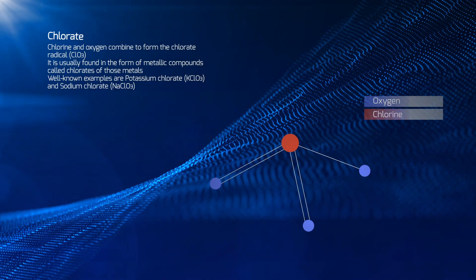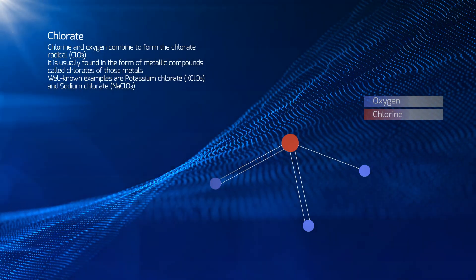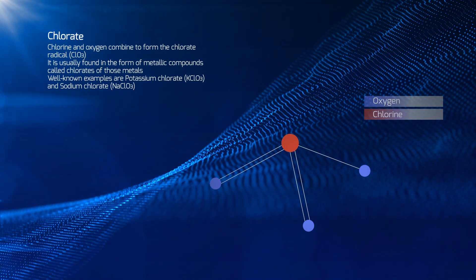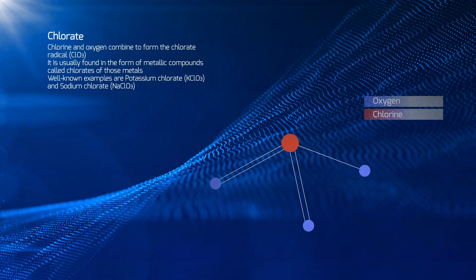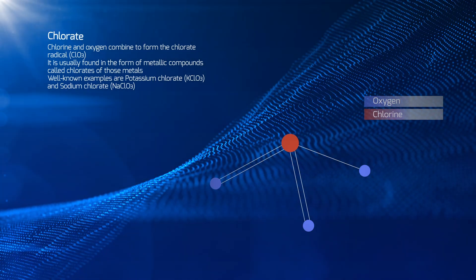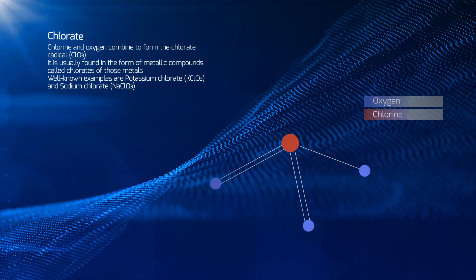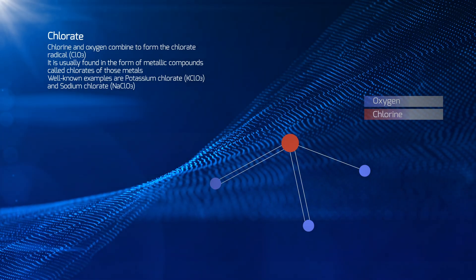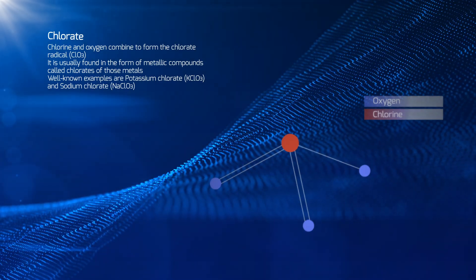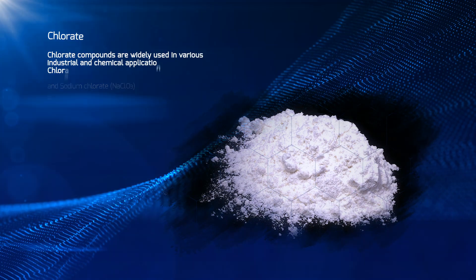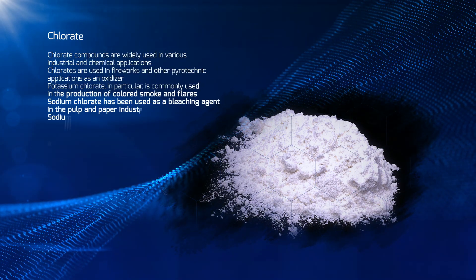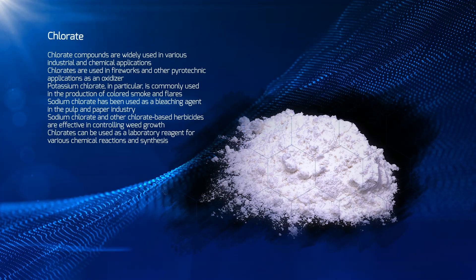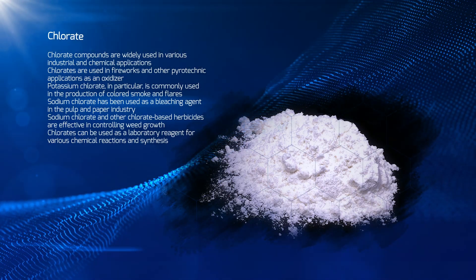Chlorine and oxygen combine to form the chlorate radical, which is usually found in the form of metallic compounds called chlorates. Well-known examples are potassium chlorate and sodium chlorate. Chlorate compounds are widely used in various industrial and chemical applications.